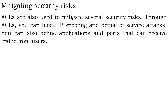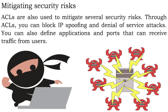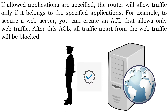Mitigating security risks: ACLs are also used to mitigate several security risks. Through ACLs, you can block IP spoofing and denial of service attacks. You can also define applications and ports that can receive traffic from users. If allowed applications are specified, the router will allow traffic only if it belongs to the specified applications. For example, to secure a web server, you can create an ACL that allows only web traffic. After this ACL, all traffic apart from the web traffic will be blocked.